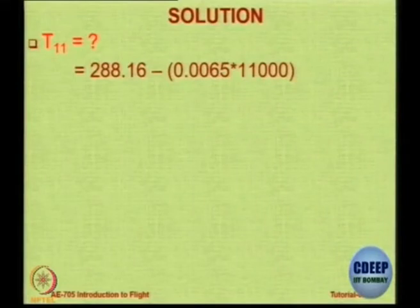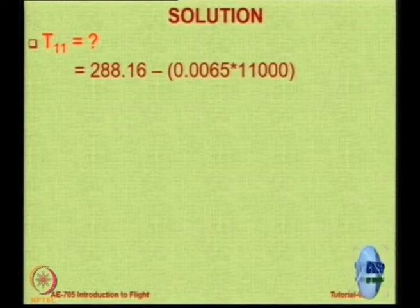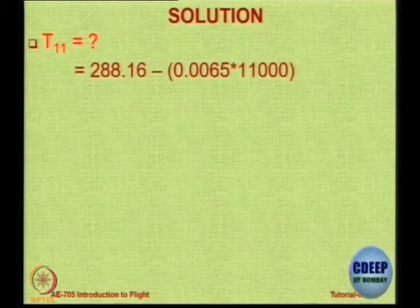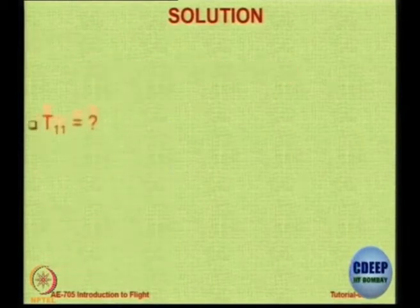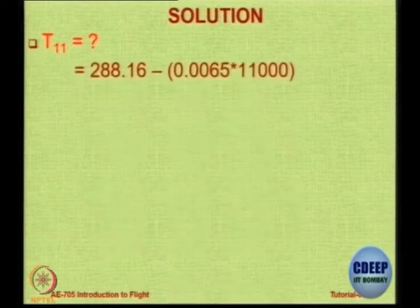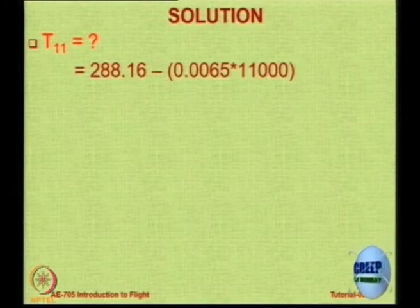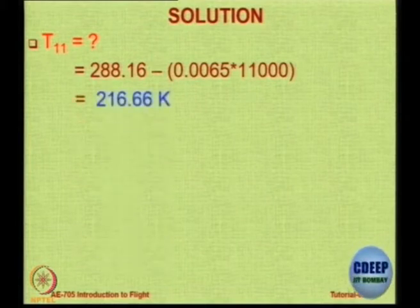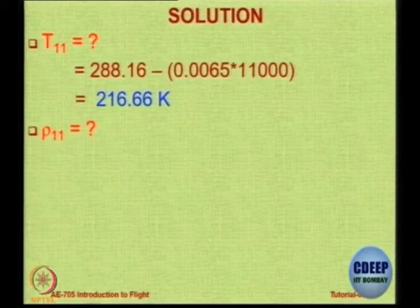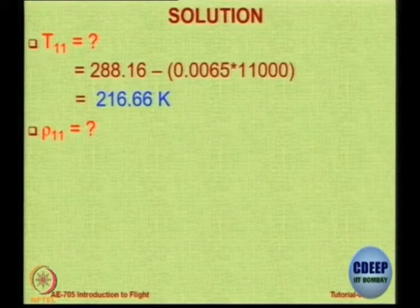T11 stands for temperature of the ambient air at 11 kilometers under ISA conditions. We assume ISA because it says standard height of 11 kilometers. So the temperature is 216.66 Kelvin. Now how do you get the density ρ, because you need ½ρV²? Does anybody remember how to get the density ratio?